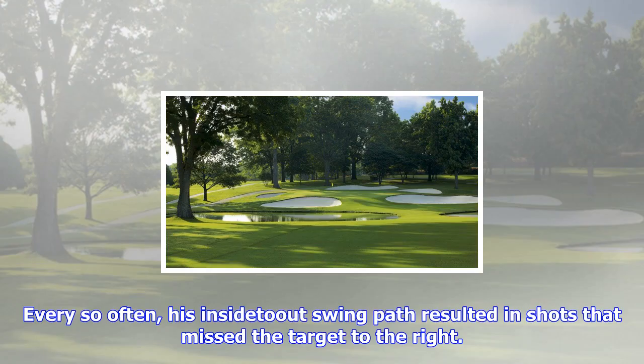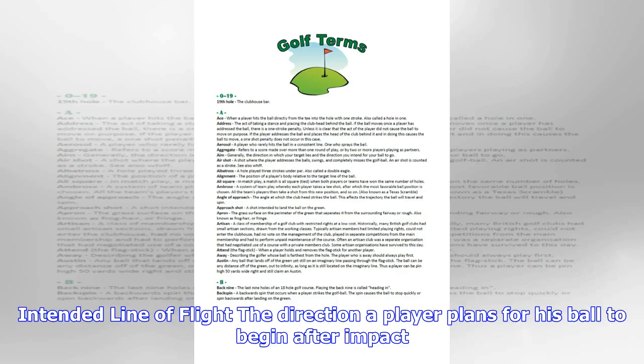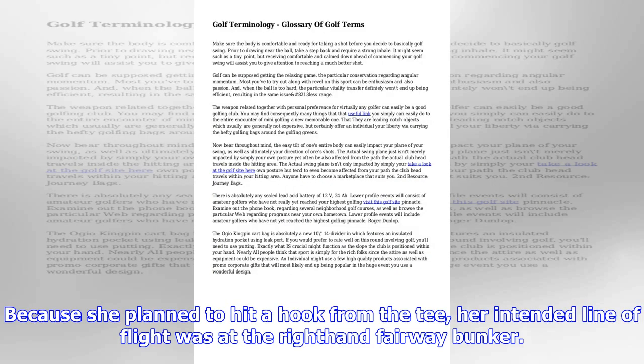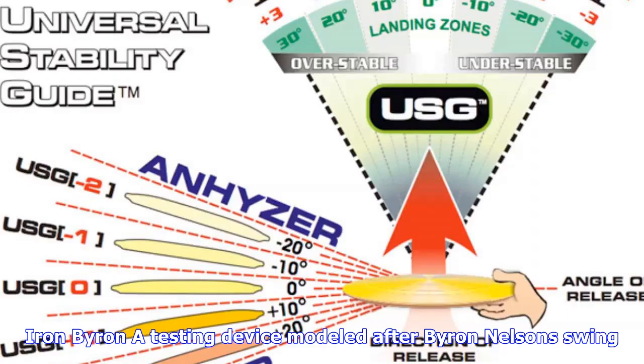Grain: the direction which the blades of grass grow, which is of primary importance on the greens, particularly Bermuda grass greens, as this can affect how much and in which direction a putt breaks. Sam Snead won many tournaments in Florida because he was so adept at reading the grain in the greens.